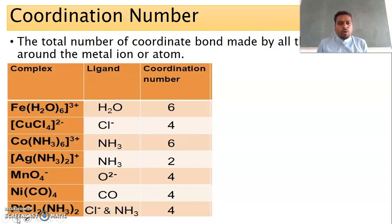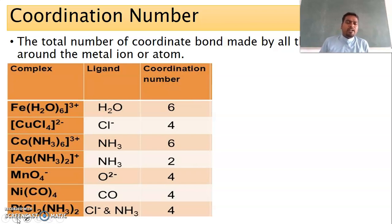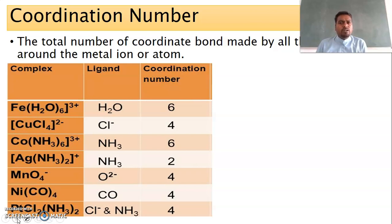The name itself indicates Coordination Number is a number. It is the number of coordination bonds present around a central metal ion. Or we can also define it as the number of electron pairs donated by the ligand. It is also called the Coordination Number of the Central Metal Atom. To identify the coordination number, you just count the number of bonds — that is equal to the coordination number. To identify the coordination number of a complex, you must be familiar with the nature of the ligand.